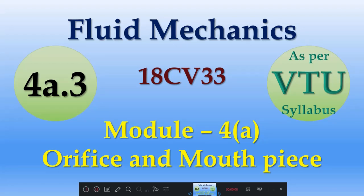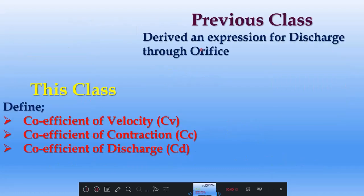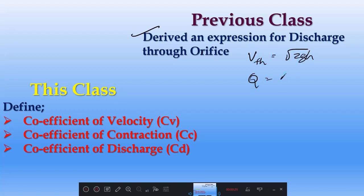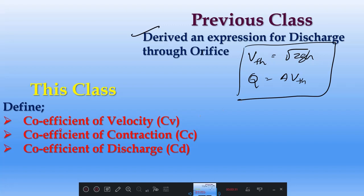In the previous class, we discussed about the derivation of an expression for discharge through an orifice. We derived that theoretical velocity is equal to root 2gh, and q is equal to area into velocity. In the present class, we will be defining coefficient of velocity, coefficient of contraction, and coefficient of discharge.